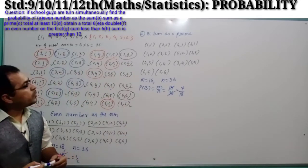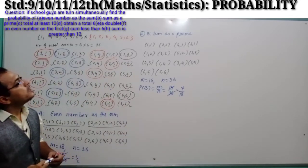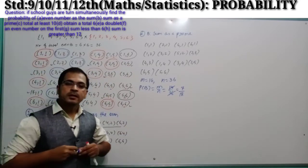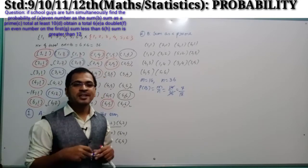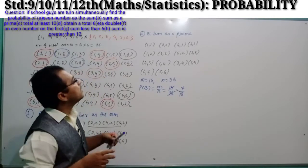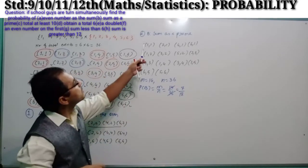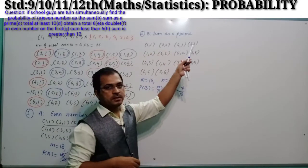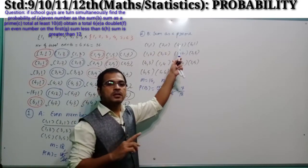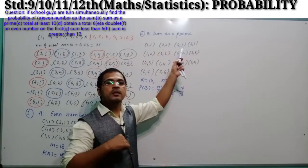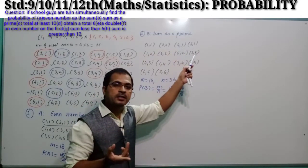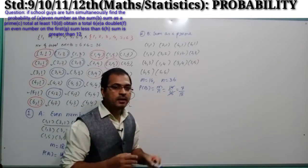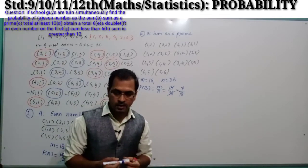So students, you can conclude that if two dice are thrown simultaneously, the probability that the sum of the numbers on the dice is a prime number is 7/18.